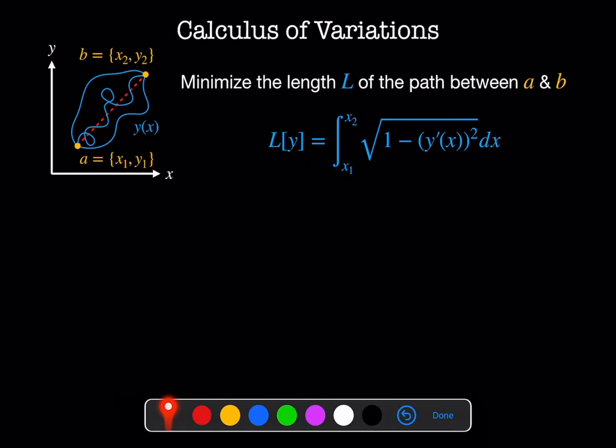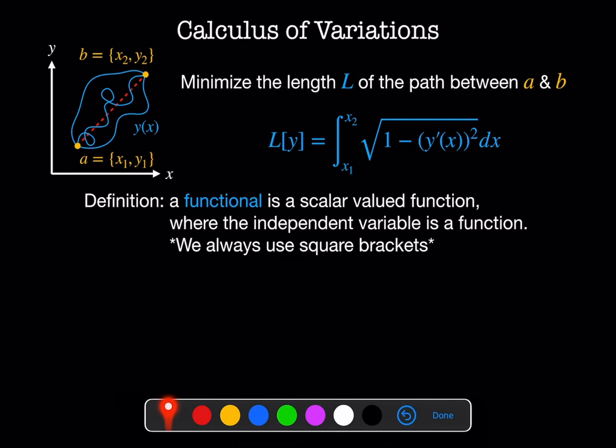L is what we call a functional. A functional is a scalar-valued function where the independent variable is a function. So here this y in square brackets is this arbitrary function. We're trying to minimize the function y, and we're not trying to extremize to find a number like we do in single variable calculus, but we're trying to extremize to find the ideal function. And note, we always use square brackets to denote that something is a functional.